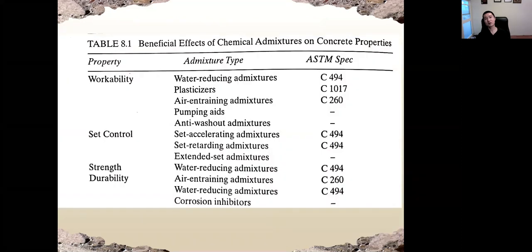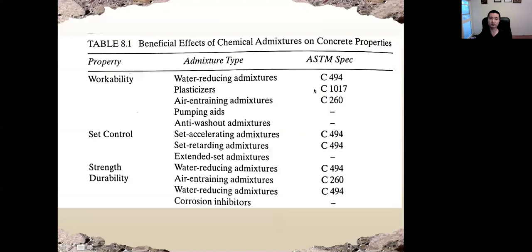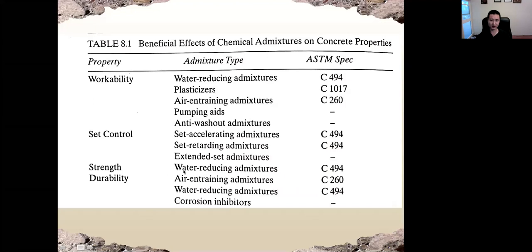This table summarizes the major types and beneficial effects of chemical admixtures. Workability is specified by ASTM — the American Society of Testing and Materials. We have water-reducing admixtures and plasticizers as well as air-entraining admixtures for workability. For set-controlling admixtures, we have accelerators and retarders. For strength, water-reducing agents are relevant. For durability, we have air-entraining agents, water-reducing admixtures — which may also improve concrete durability besides enhancing strength — and corrosion inhibitors.